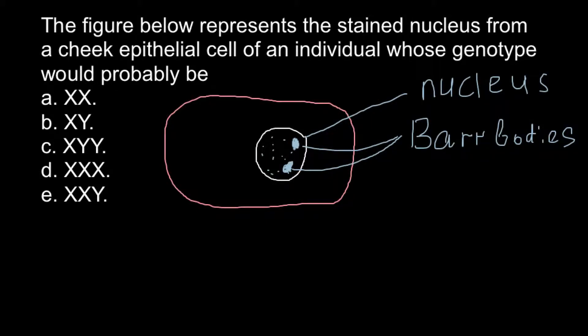Today's problem is: the figure below represents the stained nucleus from a cheek epithelial cell of an individual whose genotype would probably be. Here are five answers to choose from. If you need time, you may stop the video here, think about each answer, and when you are ready you can run the video again and compare your answer with my answer and explanation.